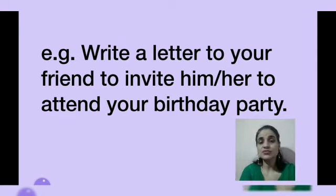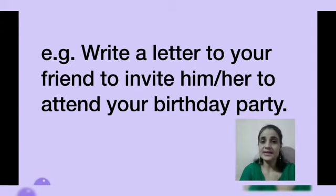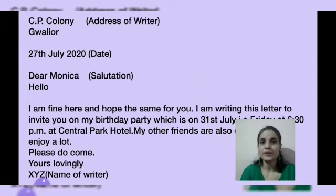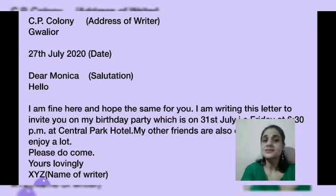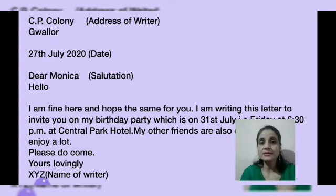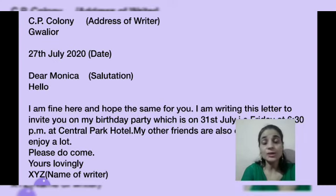Let's understand this with an example. Write a letter to your friend to invite him or her to attend your birthday party. First, write the address of the writer — as written here, 'CP Colony' — you can write your own address. Then leave one line gap and write the date of writing the letter, for example 27th July 2020. Note: no need to write the word 'DATE' — that is just shown here as part of the format.